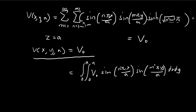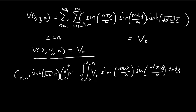By Fourier's trick, the only surviving terms on the left-hand side are those where n equals n' and m equals m'; all other cross terms vanish. The integrals in x and y each yield a/2, so together they produce a factor of (a/2)².